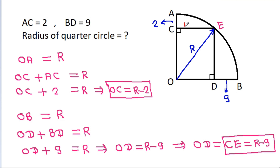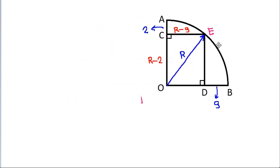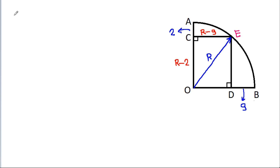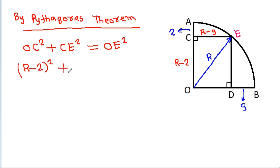So CE is R minus 9 and OC is R minus 2. Now, by the Pythagorean theorem, OC² plus CE² equals OE². So we have: (R minus 2)² plus (R minus 9)² equals R².